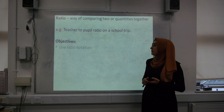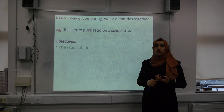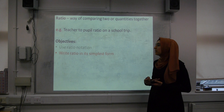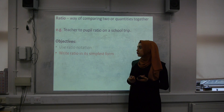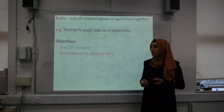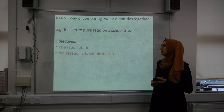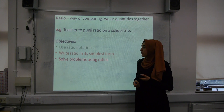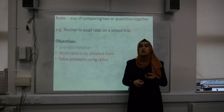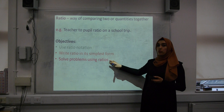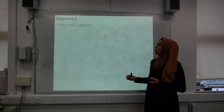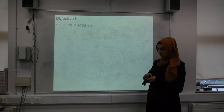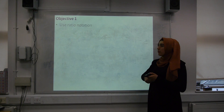We have three main objectives to tick off by the end of this video. The first objective is to be able to use and understand ratio notation. The second objective is to write a ratio in its simplest form — you already know how to do this. The third and final objective is to solve problems using ratios, and this is the most important one.